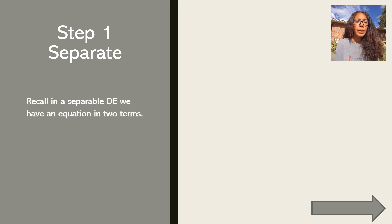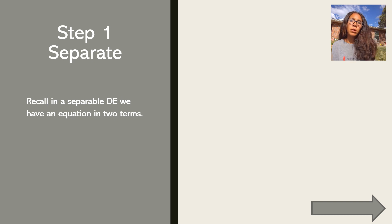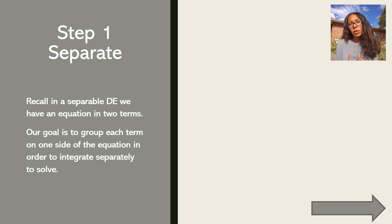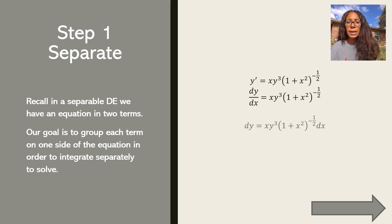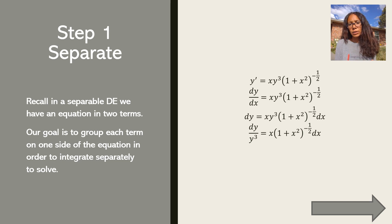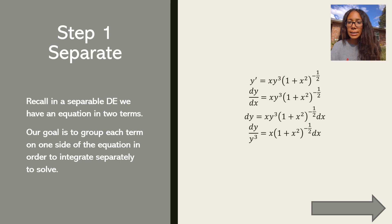We start with step 1, which is to separate. In a separable differential equation, we group all terms onto separate sides so we can integrate easily. Recalling that y prime is the same as dy/dx, we multiply both sides by dx and divide both sides by y cubed. Now all the y terms with dy are on the left-hand side, and all the x terms are on the right-hand side.